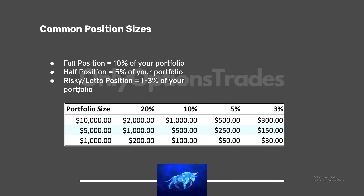Consistent position sizing is really important because it makes it easier to take a loss — it's not so detrimental to the progress you've made. At the end of the day, the losses are what really set us back. Big losses are unacceptable. If you take a big loss, you need to take a step back and reflect. There are only two reasons to take a big loss: you didn't stop out, or you had too much money in the trade. You went too heavy or you didn't listen to your stop loss. Every time you take a big loss, figure out what you did wrong.